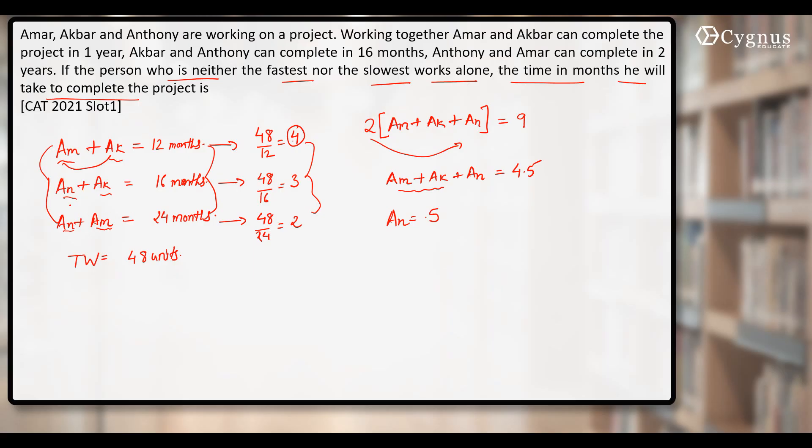Similarly, when you put Anthony plus Akbar, this one is equal to 3. When you put 3 here, Amar becomes 1.5.